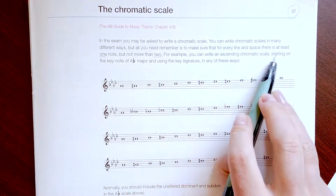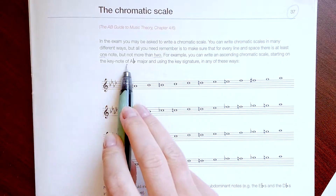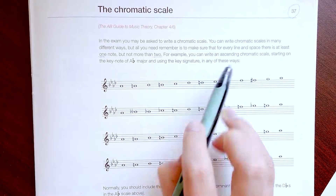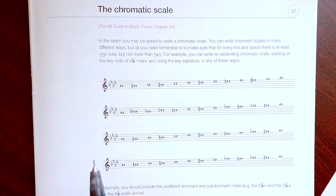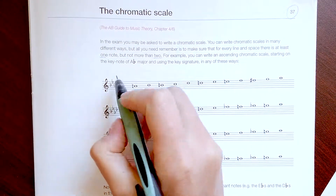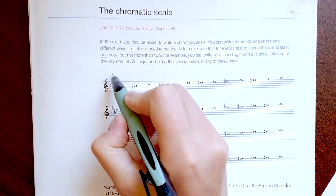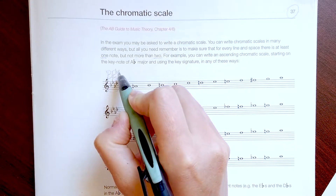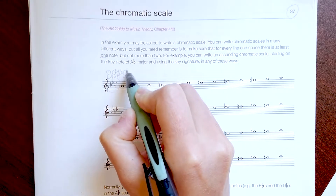Let's see how it works in an example on A flat major. First of all we have to identify the key signature. It's four flats: B, E, A, and D flats.